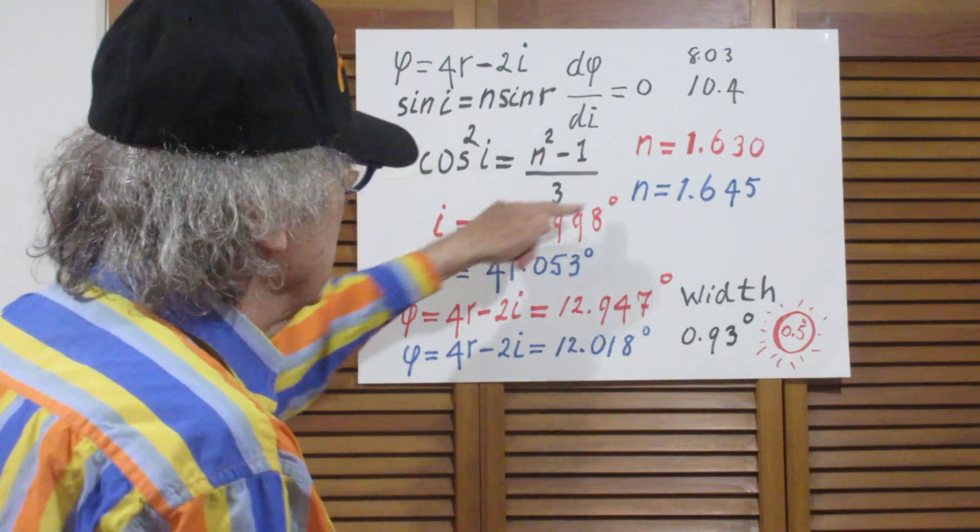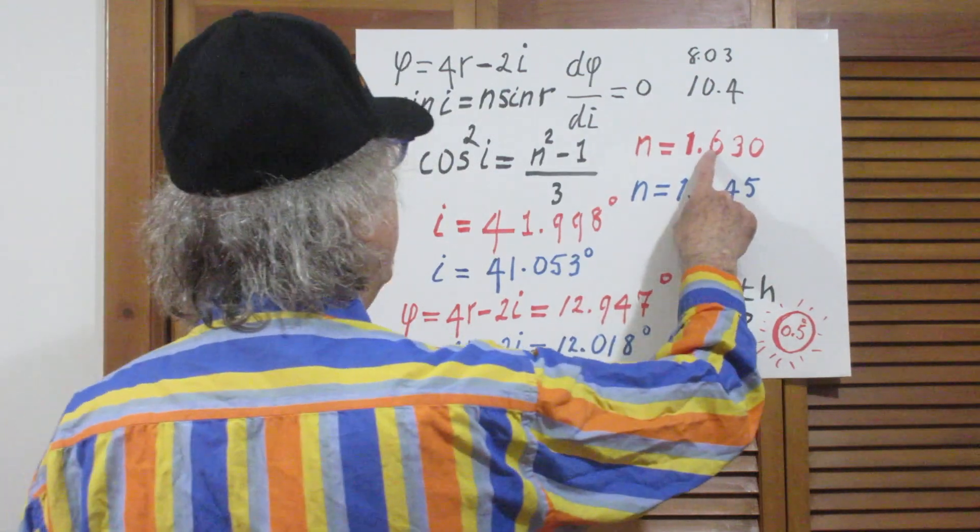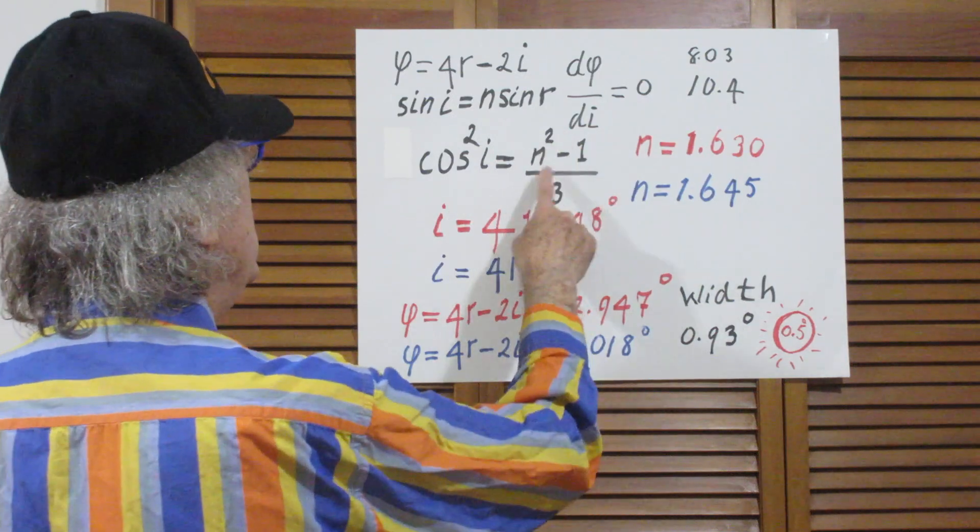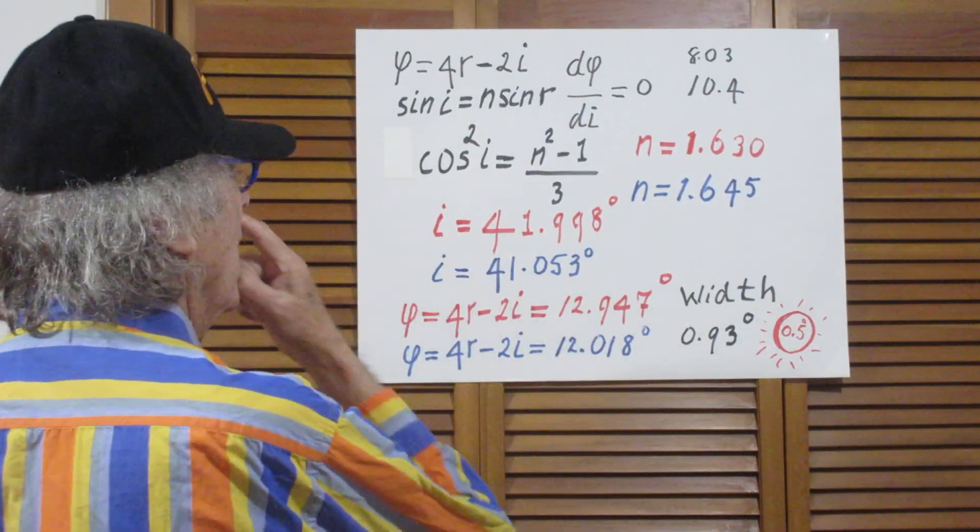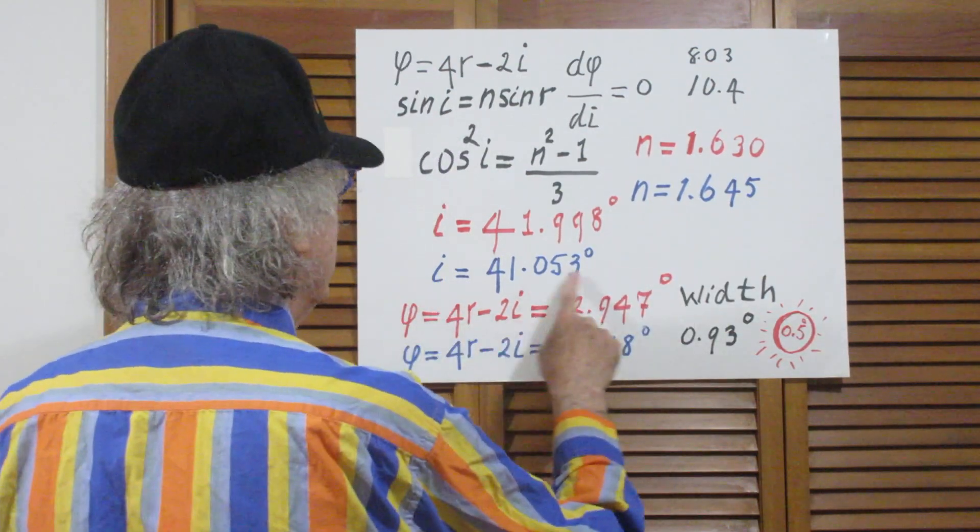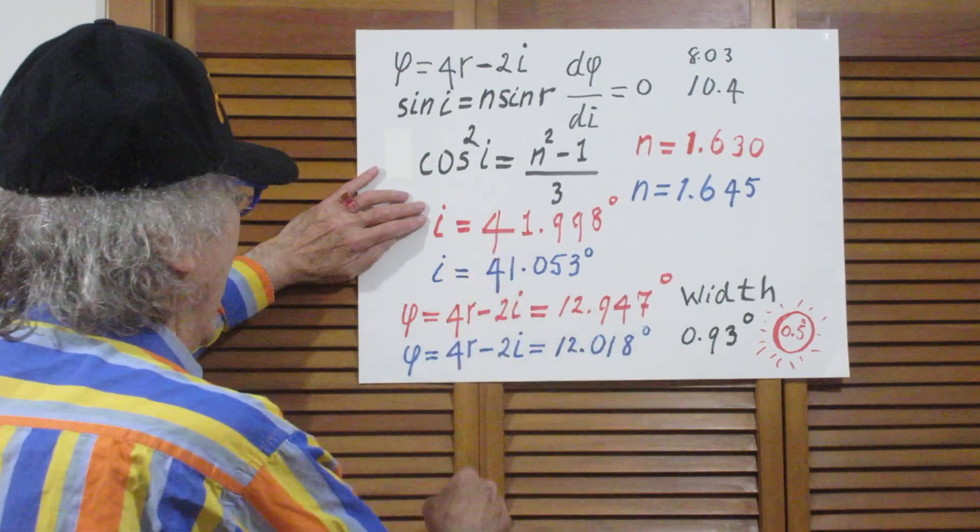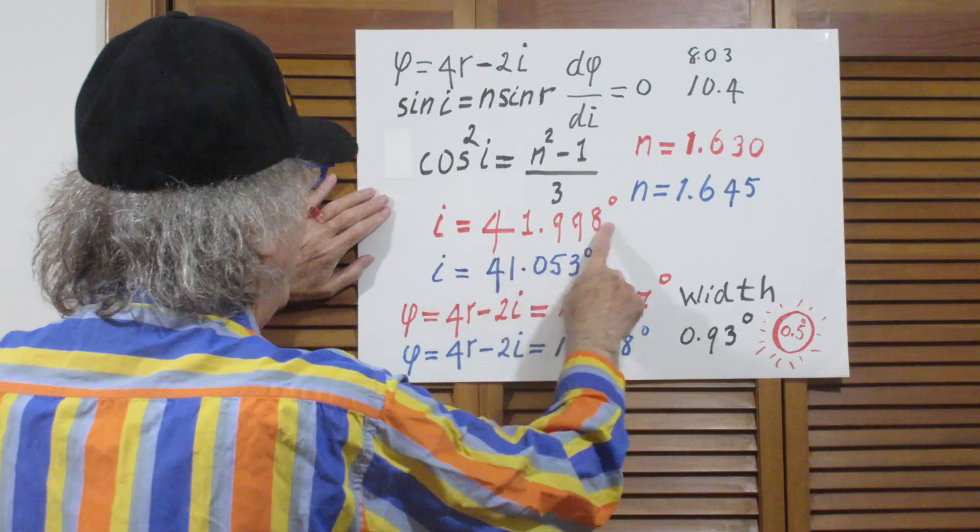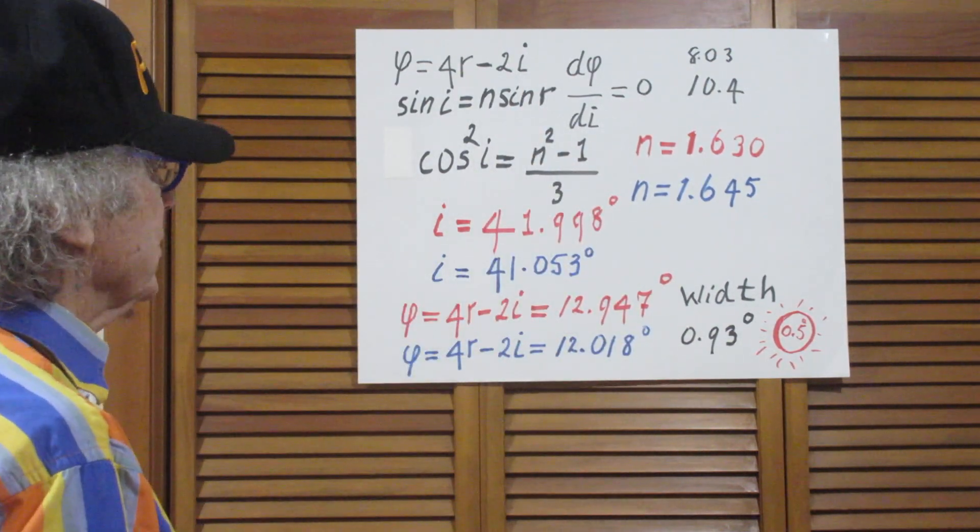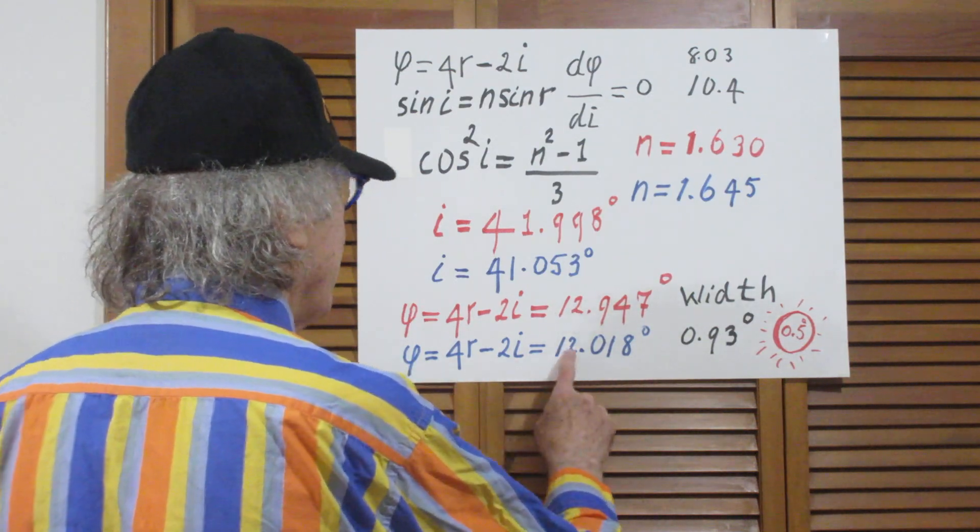So once you accept this, the problem is effectively done. We take the index of refraction for red light for our plastic. So you substitute in here this n and you find the cosine of i, so you find i. So i is this number. Then you do the same for blue light. Then you find i is this number. So now if you want to know what phi is at that angle of i, then it is 4r minus 2i. And you find r very easily because you use Snell's law and this value for i to calculate r. So the rest is peanuts. So you'll find then that phi for the red light is 12.947 degrees and for blue light it is 12.018 degrees.